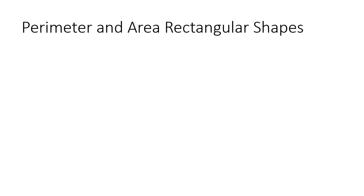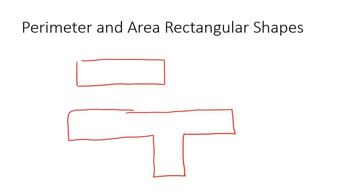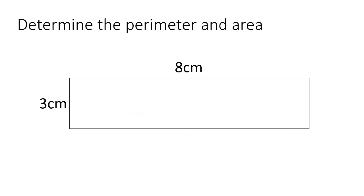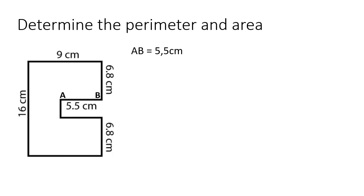When I say rectangular shapes, I'm not only talking about easy examples like a single rectangle. What I mean is we're going to combine rectangles. So we're going to have shapes that look like compound forms — these are all rectangular parts. So that's like a rectangle, that's a rectangle. I'll show you some of the examples we're going to do.